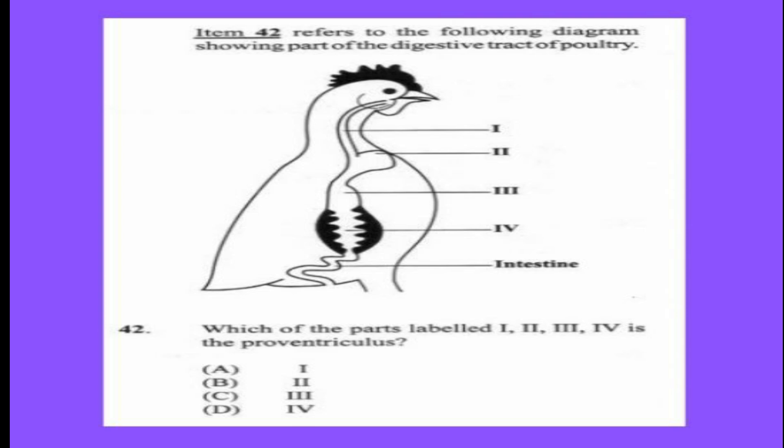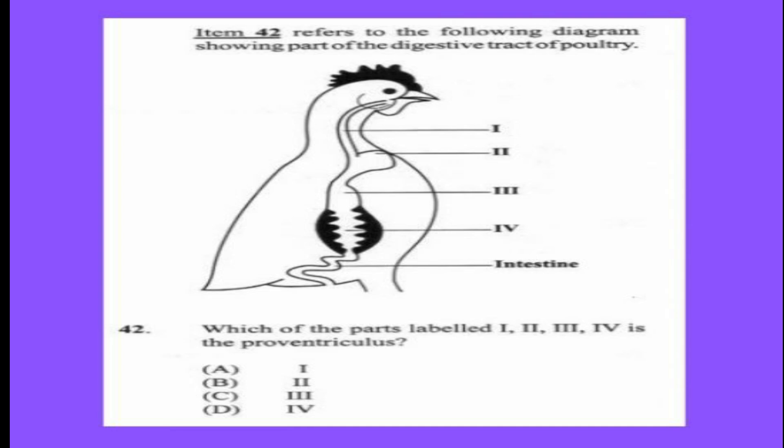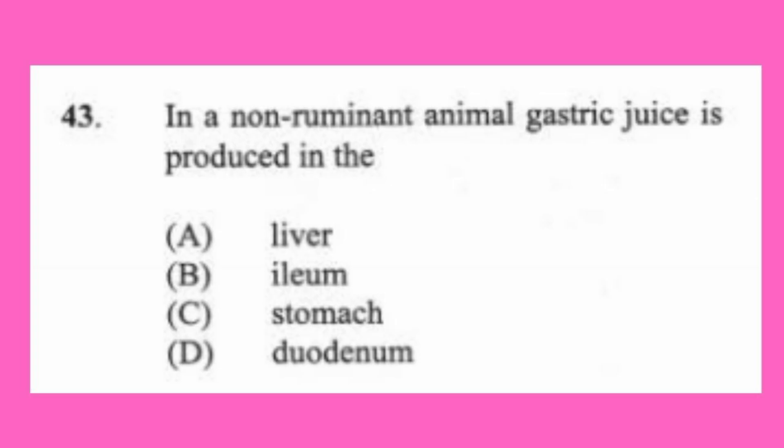Question 42 refers to a diagram showing part of the digestive tract of poultry. Which of the parts labeled 1, 2, 3, 4 is the proventriculus? The answer is C, three. Part 1 is the esophagus, 2 is the crop, 3 is the proventriculus, and 4 is the gizzard.